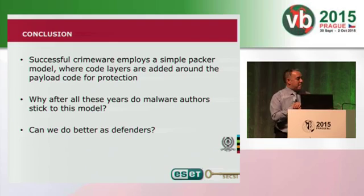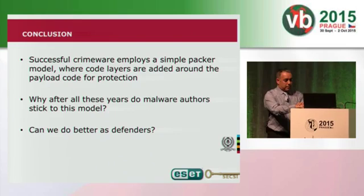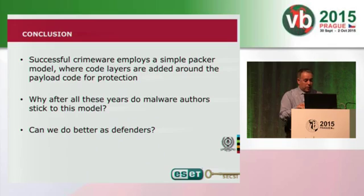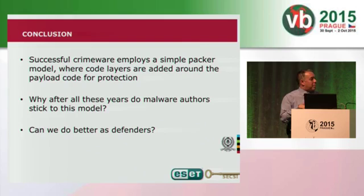Did you find any particular markers that were different between malware with two waves versus six waves that would indicate beforehand how many waves there would be? No. What was surprising is that the number of waves was not consistent across a family. That suggests these samples were not all packed the same way — there might be some randomness in how the packer generates the packed version, or malware authors could be switching packers during the lifetime of the malware. We didn't do deep analysis of how wave numbers evolved over time within a family — that would be the next step.